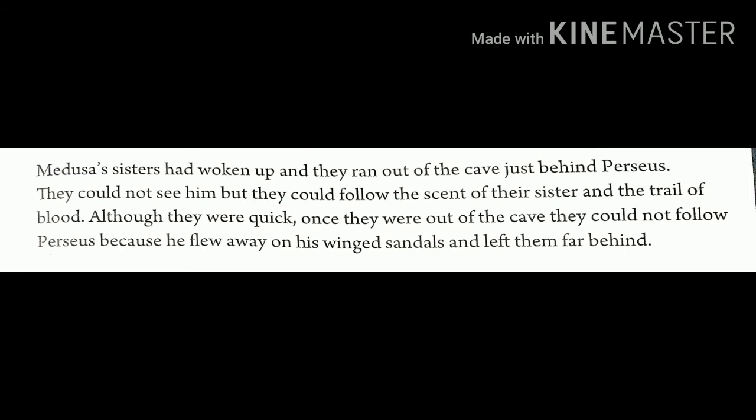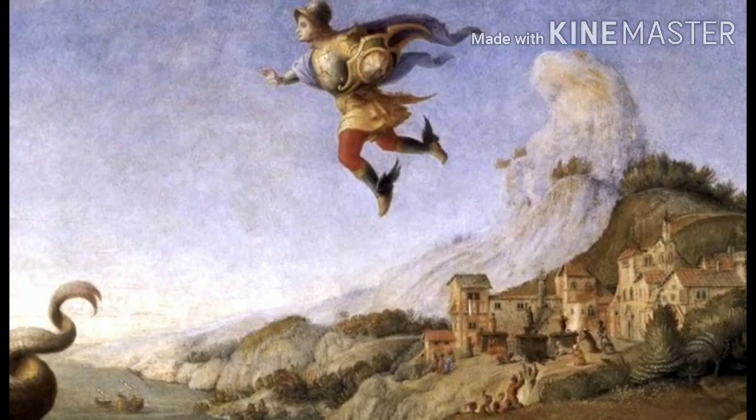Medusa's sisters had woken up and ran out of the cave just behind Perseus. They could not see him, but they could follow the scent of their sister and the trail of blood. Although they were quick, once they were out of the cave they could not follow Perseus because he flew away on his winged sandals and left them far behind. Soon after Perseus chopped Medusa's head, Medusa's sisters woke up and started to chase him, but could not reach him as he flew away with the help of the winged sandals given by the god Hermes.